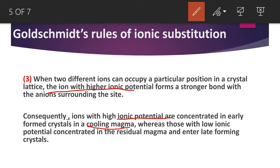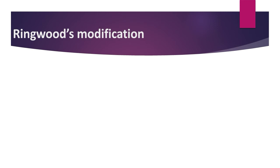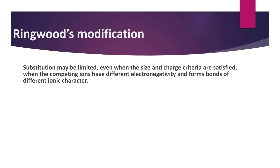Ions with lower ionic potential will be found in the residual melt or in late-forming crystals. This is how we can apply Goldsmith's third rule. Now, Goldsmith's rules have some exceptions, and these are addressed by Ringwood's modification.